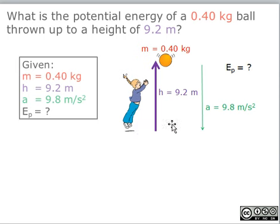This is the diagram displaying the given information. It shows a girl throwing a ball up into the air to a height of 9.2 meters. The mass of the ball is 0.4 kilograms, and the acceleration of the ball as it comes down is 9.8 meters per second squared. We are solving for the potential energy of the ball.